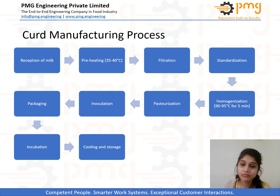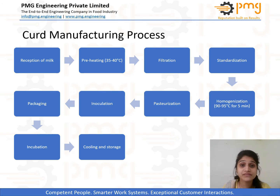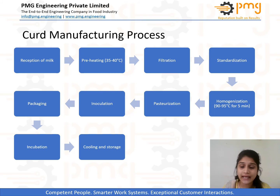After homogenization comes the most important step in the dairy industry: pasteurization, which can be done in three ways. LTLT (low temperature long time) is done at 63°C for 30 minutes; HTST (high temperature short time) at 72°C for 15 seconds; and UHT (ultra high temperature) at 125 to 138°C for around 2 to 4 seconds. This pasteurization step is important for both the customer and the active cultures that will be added, since it eliminates potential competitors in the environment.